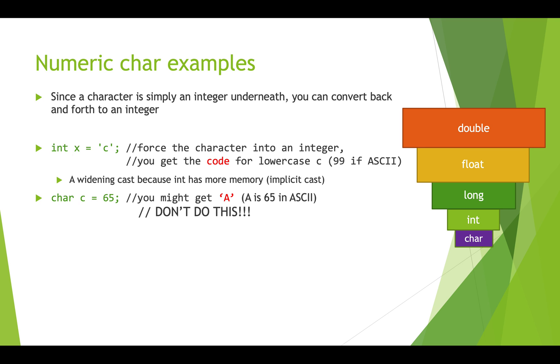You can also do it the other direction. If you have an integer like 65 and you store it in char c, well 65 is the capital letter A in the ASCII table. This could be problematic because you might think that you're going to get A but if ASCII is not the character set that's being used you could get something different.